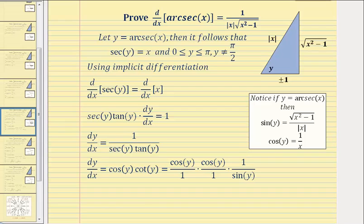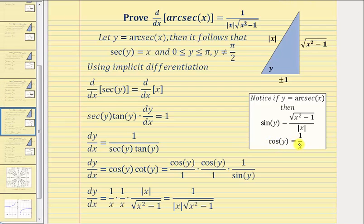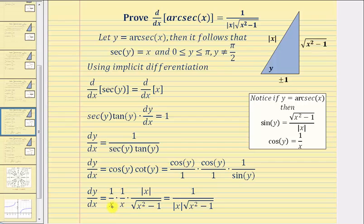Performing substitution, we know cosine y is equal to one over x, so we have one over x times one over x, times the reciprocal of sine y. The reciprocal of sine y is the absolute value of x divided by the square root of the quantity x squared minus one. Before we multiply, we can simplify — there's a common factor of x between the numerator and denominator. The absolute value of x is always positive, and x times x equals x squared will also always be positive. So when we simplify out the common factor of x, to ensure the result is always positive, we write the remaining factor as the absolute value of x. And we have our proof.